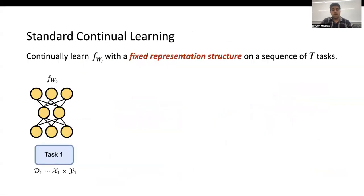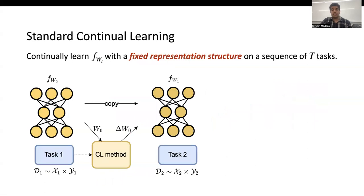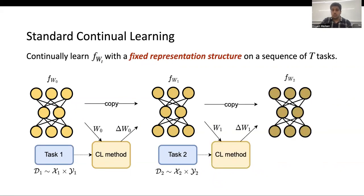To explain continual learning, let's consider a setup where we have the continual learner learning on task D1. But now when task 2 arrives, we copy the weights which have been learned for task 1 and continue learning on the second task. But the goal here is to also preserve the information for the prior task. This process continues as we obtain more and more tasks. But the limitation of existing methods is that we assume we only have a fixed representation structure for all the tasks, which is very restrictive in practice.